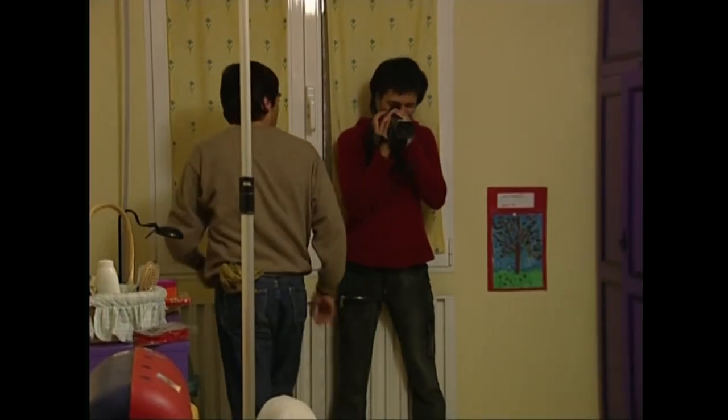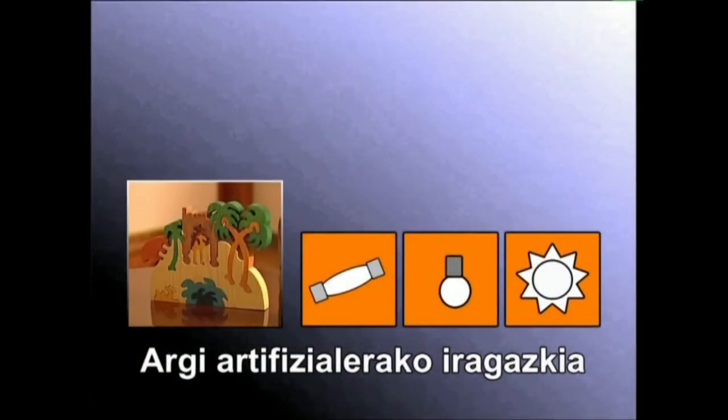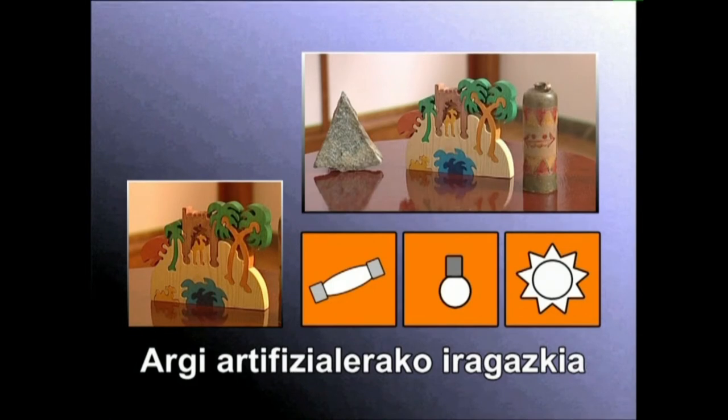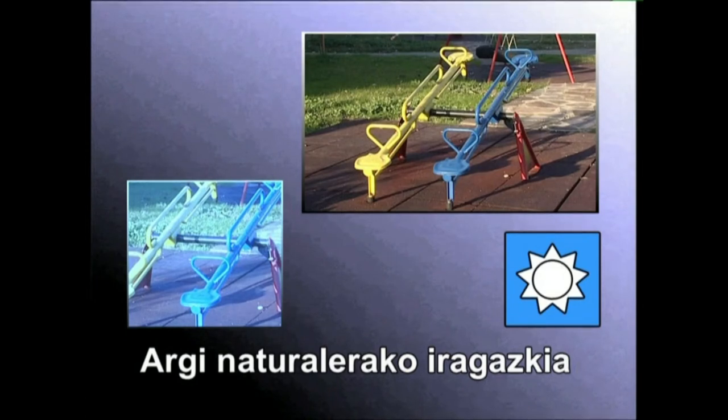Bideokamerara datorkigun argi sortaren kolorea zuzentzeko bi aukera ditugu: argi bakoitzaren kolorea zuzendu, edo bideokameraren objektibuari iragazki zuzentzaile bat jarriz argi guztien koloreak denak batera zuzendu. Jakin behar dugu bideokamerek bi iragazki dauzkatenak: argi artifizialarekin lan egiteko iragazkia, argi halogenoei eta goritasun lamparei nabarmentzen zaien kolore laranja eta egunsentiko eta arratseko tonu laranjak zuzentzen dituena; eta argi naturala iragazteko iragazkia, eguneko argiari nabarmentzen zaion kolore urdina zuzentzen duena.